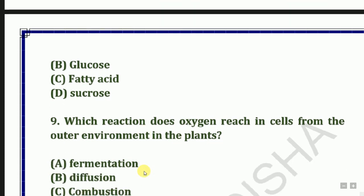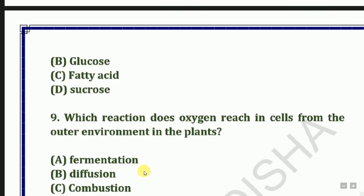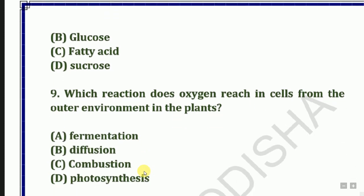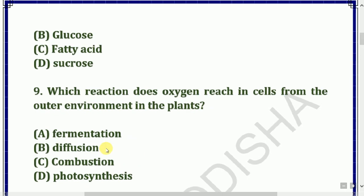Next question: Which reaction does oxygen use to reach cells from the outer environment in plants? Options: Fermentation, diffusion, combustion, or photosynthesis. The answer is diffusion.